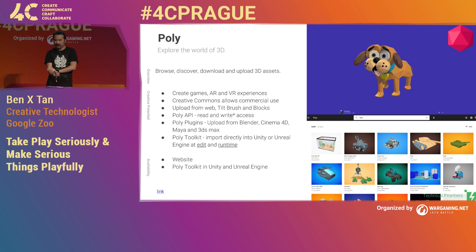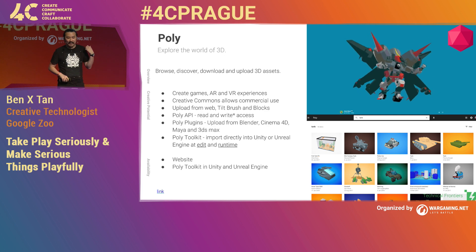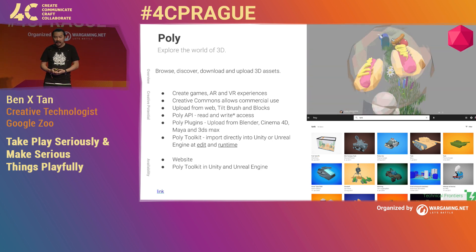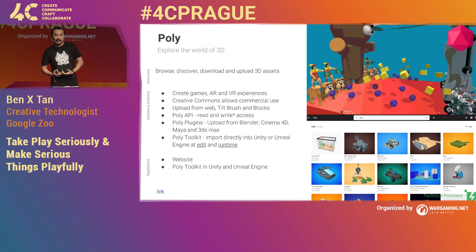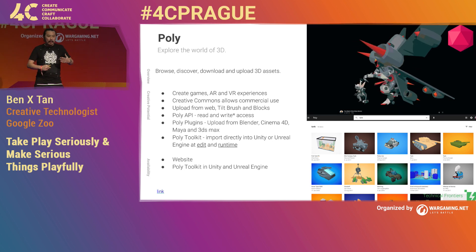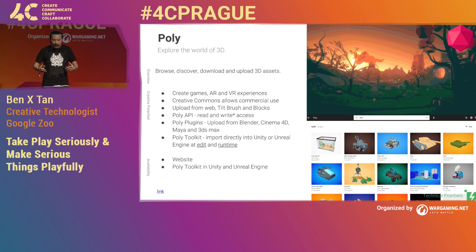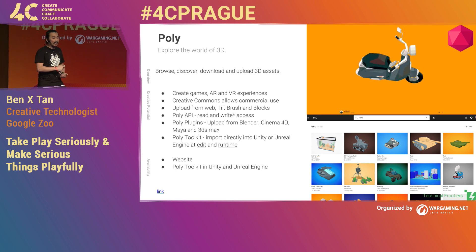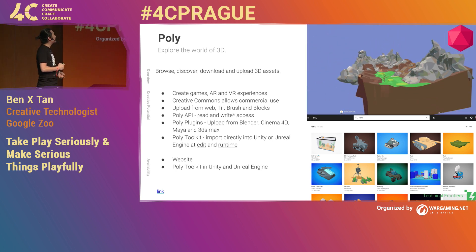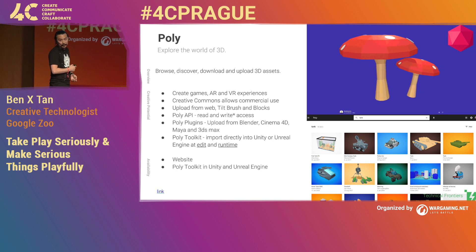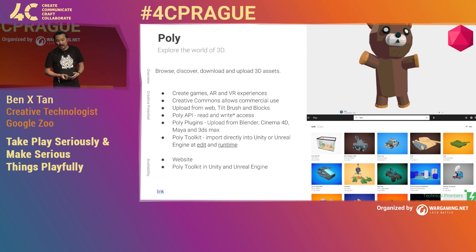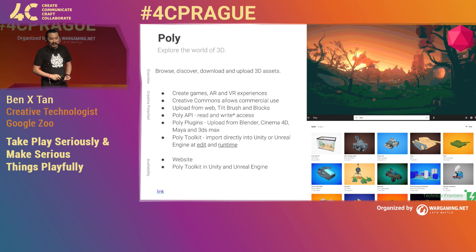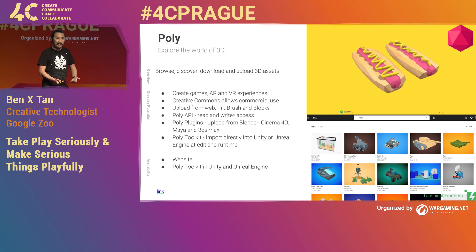Poly by Google is a website full of 3D assets. Because we're looking into VR and AR using mobile devices, we went for a low-poly look to reduce strain on hardware. Artists can upload 3D assets from Blender, Cinema 4D, Maya, or 3D Studio Max straight to Poly. Most assets are Creative Commons — check licensing before use, but if you're just prototyping, it's a giant library. You can modify them for final production games as well.